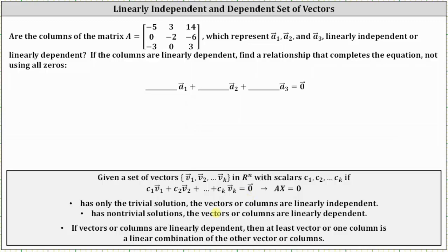If the equation has only the trivial solution, the vectors or columns are linearly independent, and if the equation has non-trivial solutions, the vectors or columns are linearly dependent. Let's go ahead and set this up on the next slide.